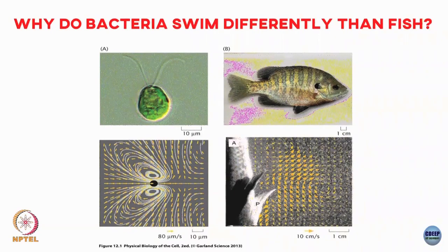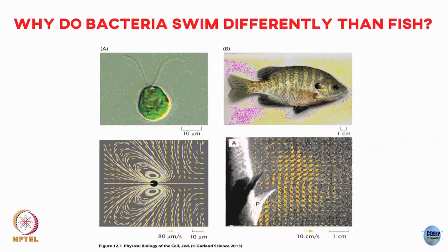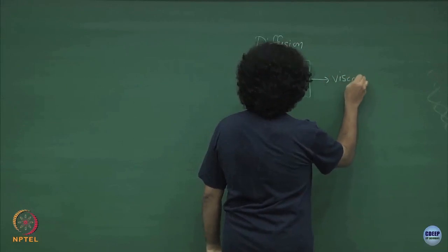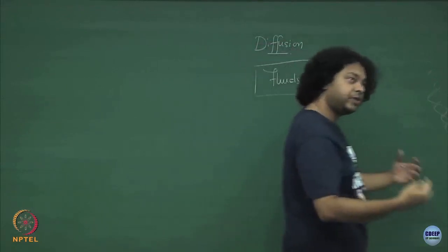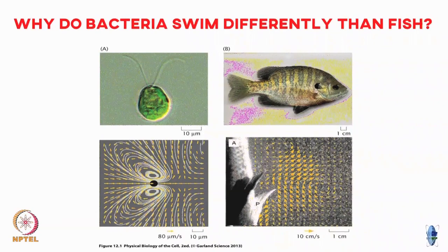What you will notice is that the scales are very different. For this algae the scale bar is around 10 microns, and for this fish the scale bar is 1 centimeter. The velocities with which they move are also very different — this algae is around 80 microns per second, whereas that is around 10 centimeters per second. We will try to come up with properties of the fluids — for example, viscosity — and combine them with the properties of the objects moving in this fluid, such as the length scales or velocities of this bacteria or algae, to quantify what sort of terms will be important in the physics of swimming.